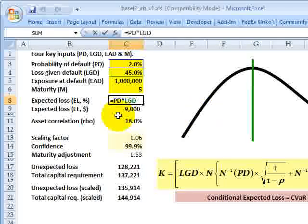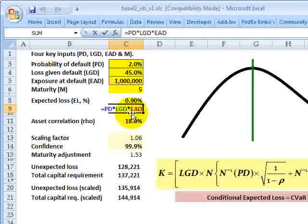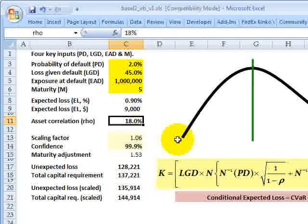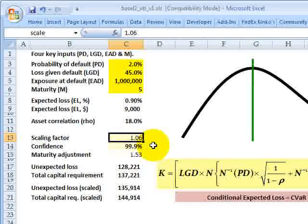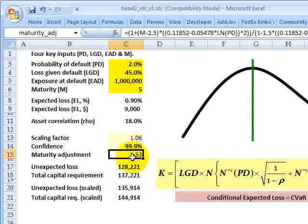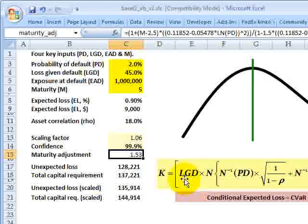It calculates expected loss, which we know is probability of default times loss given default. We can also multiply the exposure in there to get the expected loss in dollar terms. Here's that asset correlation, which needs to be at least 12% under Basel II. That's the rho of 18%. A scaling factor because Basel scales up the capital at the end of the day to make an overall adjustment. More on that later. Here's the hardwired confidence of 99.9%. Here's the maturity adjustment that reflects that final term in the IRB function that I just showed you.